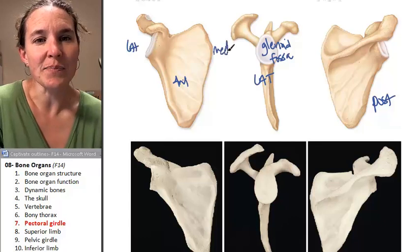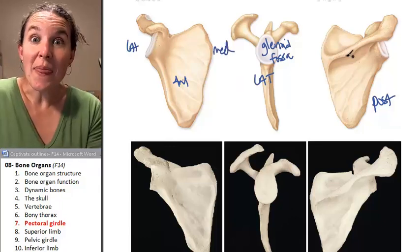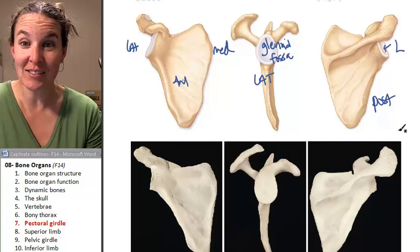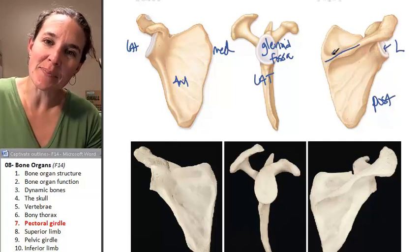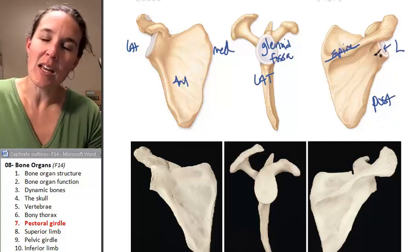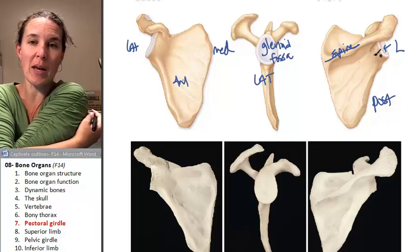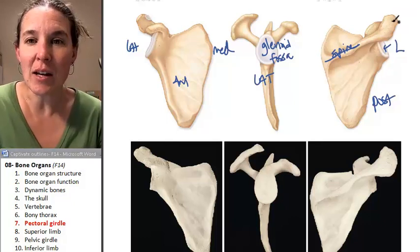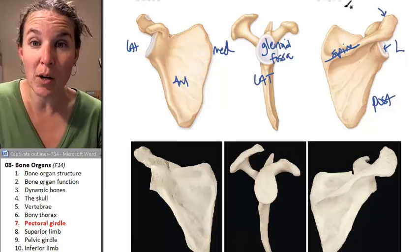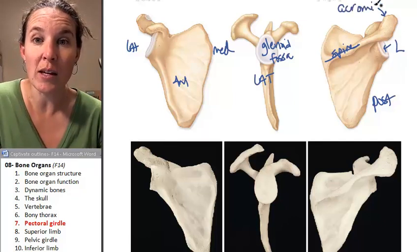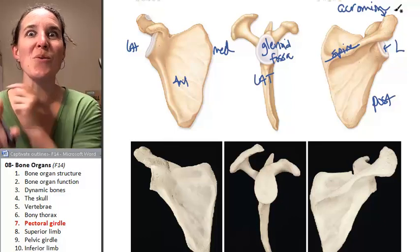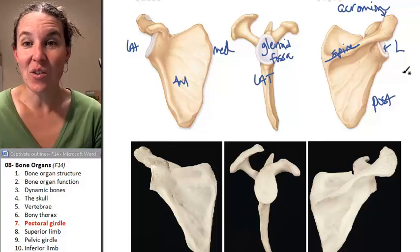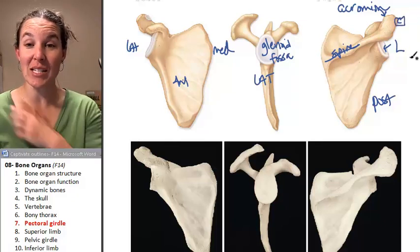This is medial, this is lateral. If you look at the posterior aspect heading lateral, you'll see a spine. You can actually feel the spine of your scapula — go ahead and palpate it. The spine of the scapula terminates in a giant bump called the acromion. The acromion is where the clavicle articulates with the scapula.